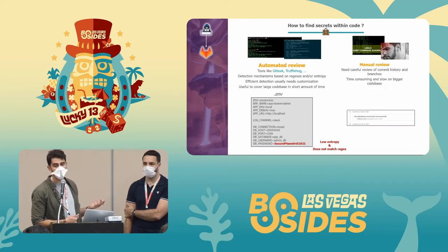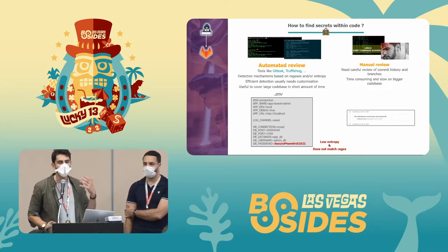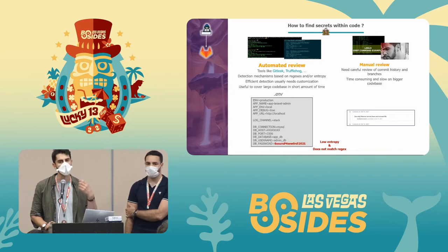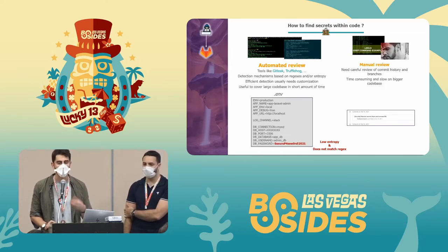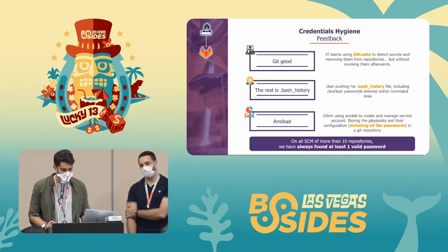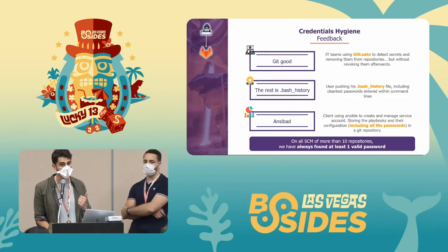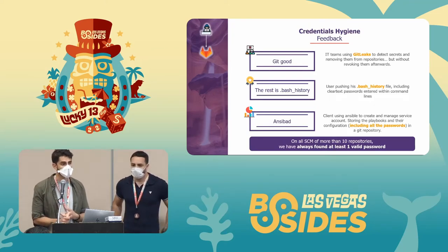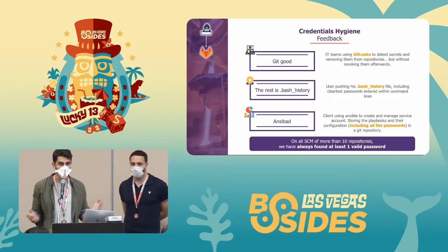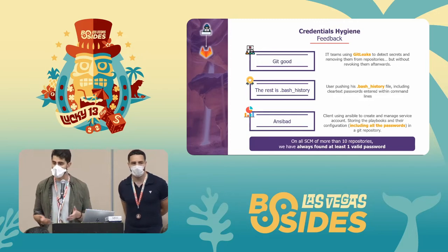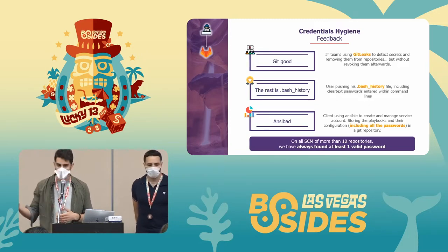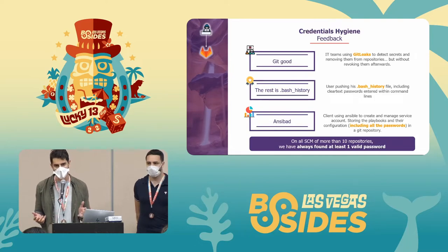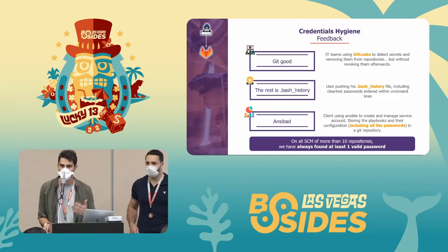Automated tools are great but have blind spots — if you only use them you'll miss some secrets. Manual review is slower but by searching for specific keywords like 'secrets,' 'passwords,' or 'credentials' within commits, you can find secrets that automated tools missed. For example, we found an IT team using git-leak to detect secrets, but when a secret was pushed they would just remove the file and push a new commit — without revoking the password.